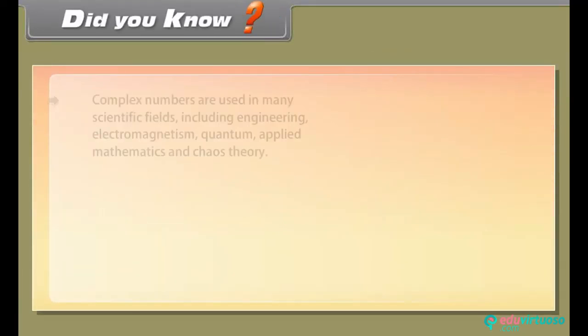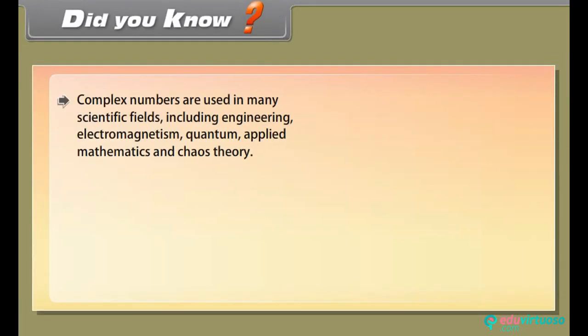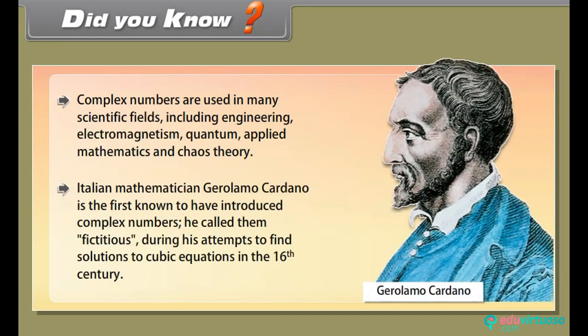Complex numbers are used in many scientific fields including engineering, electromagnetism, quantum physics, applied mathematics, and chaos theory. Italian mathematician Gerolamo Cardano was the first known to have introduced complex numbers, calling them fictitious during his attempts to find solutions to cubic equations in the 16th century.